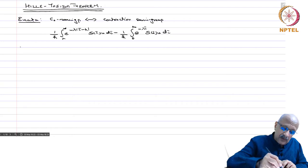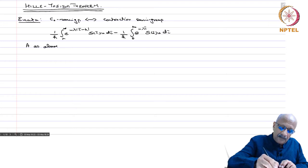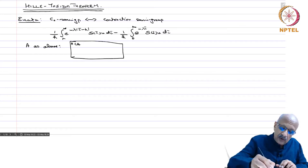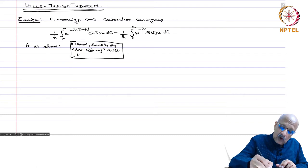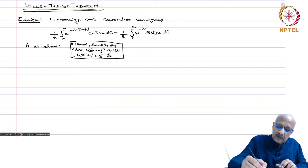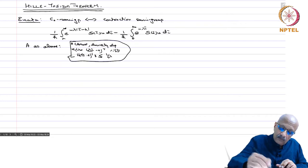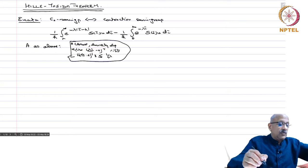In front of the lemma, I said 'A as above' and wrote down various properties: A closed and densely defined, and for every λ > 0, (λI - A)^{-1} exists. Then I wrote ‖(λI - A)^{-1}‖ = 1, which is wrong. You would have known from the rest of the proof that it should be 1/λ. So those are the corrections.